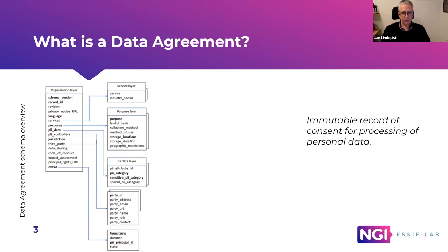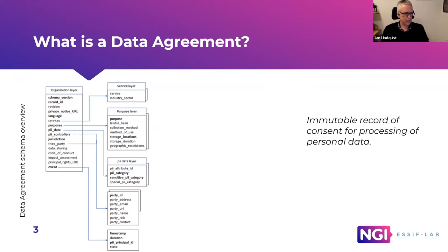So what is a data agreement? It's an immutable record of consent for processing of personal information. What we've done, tying to SSI or DLT, is that when you're exchanging information, you're creating a record of that exchange. Similar to going to a store, you buy a product and get a receipt. Here, when you use a digital service, you're actually getting a receipt of what they're providing — what service and for what purpose. This allows an individual to control more closely how they want to restrict or share their data, possibly keeping it within their jurisdiction or location.